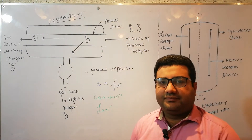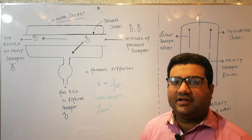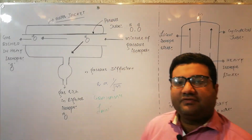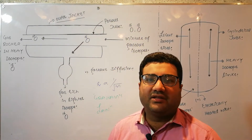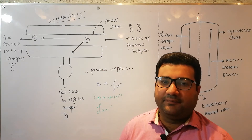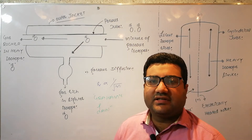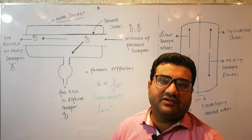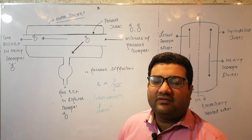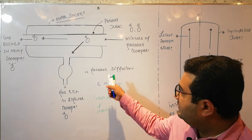Welcome everyone. We were discussing the topic of the separation of isotopes. In the previous lecture we discussed the first method of separation of isotopes, which was mass spectrometry. Today we are going to discuss other methods of the separation of isotopes, and among those methods the first that we are going to discuss is gaseous diffusion.